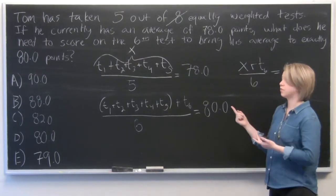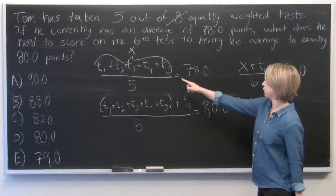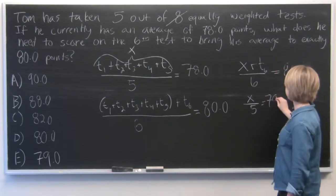But first we need to solve for x to find out what we can plug into this equation. So we've got our x over 5 equals 78.0.